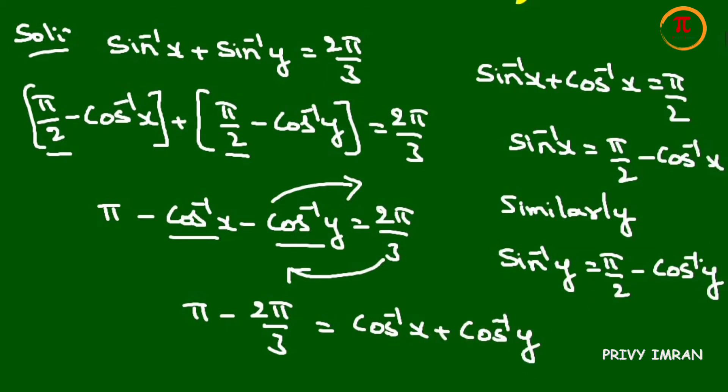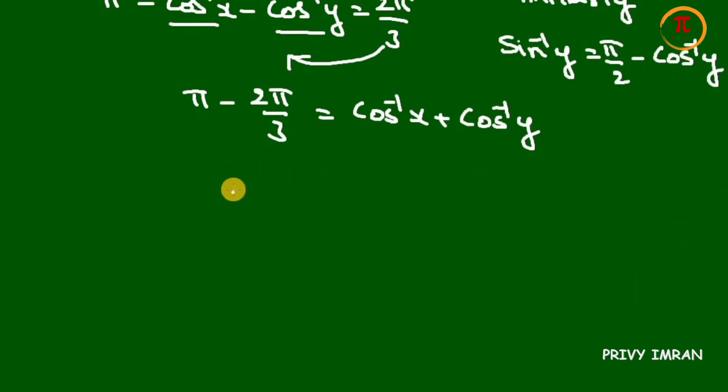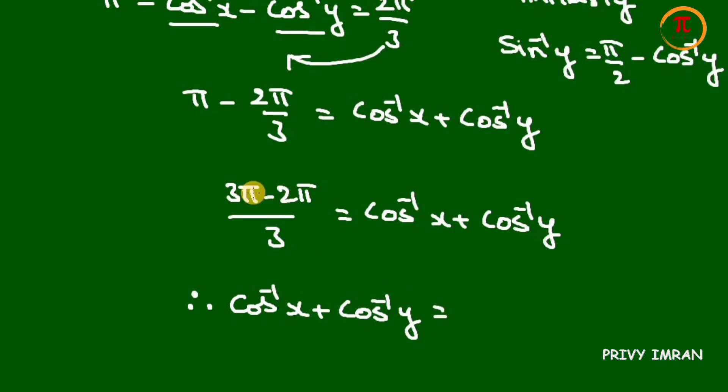Now let me take 3 as LCM. Then 3π minus 2π whole divided by 3 is equal to cos inverse of x plus cos inverse of y. Hence cos inverse of x plus cos inverse of y is equal to π/3.